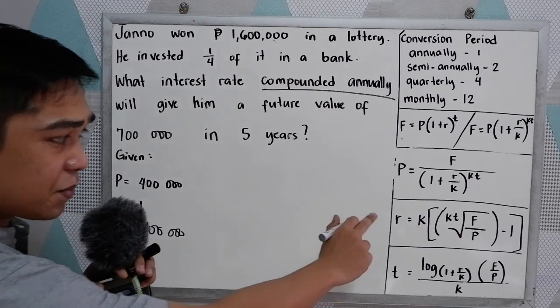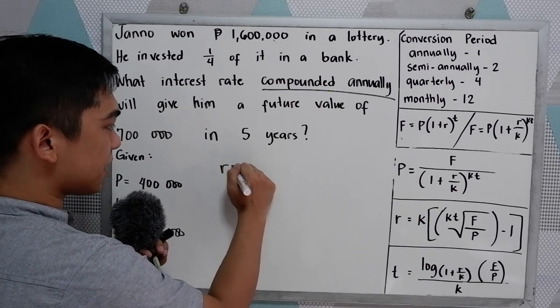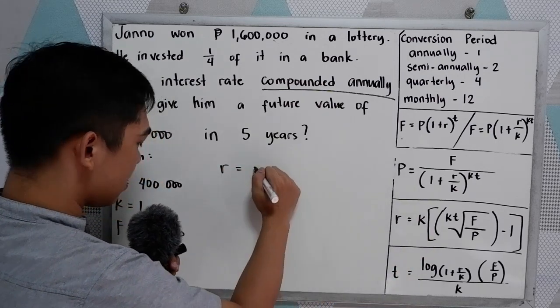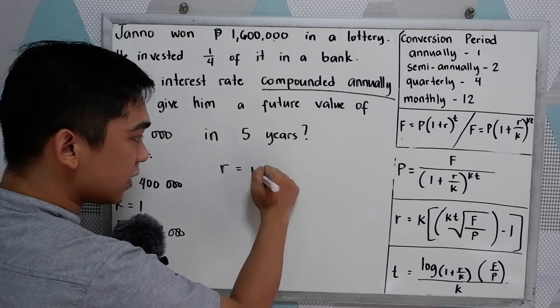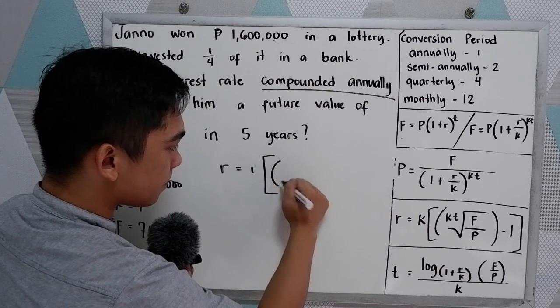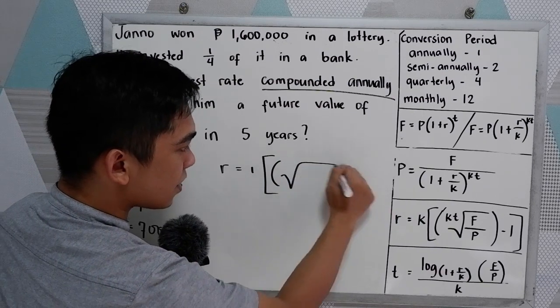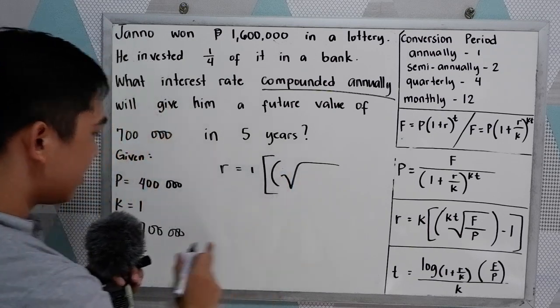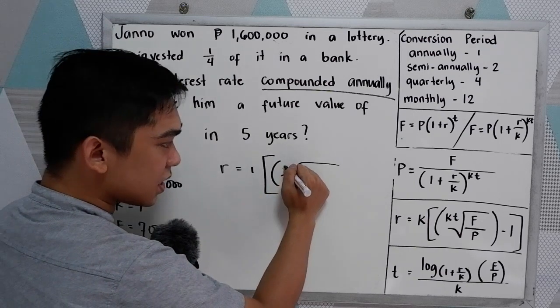Now copy our formula or simply substitute now since we know the formula. So K, our K is one. Then we have KT root. So our K, K is one times T, so one times T.